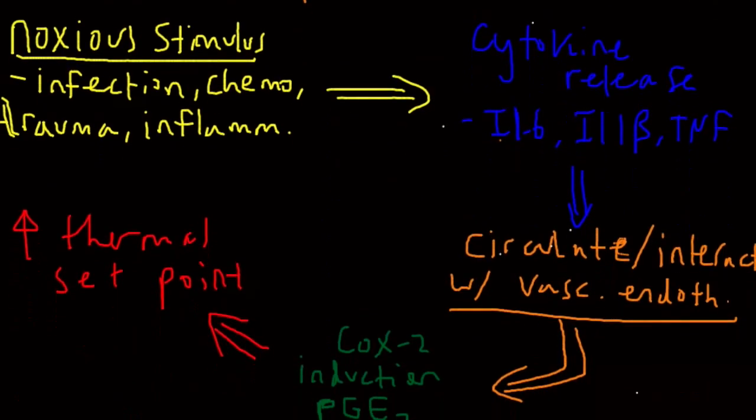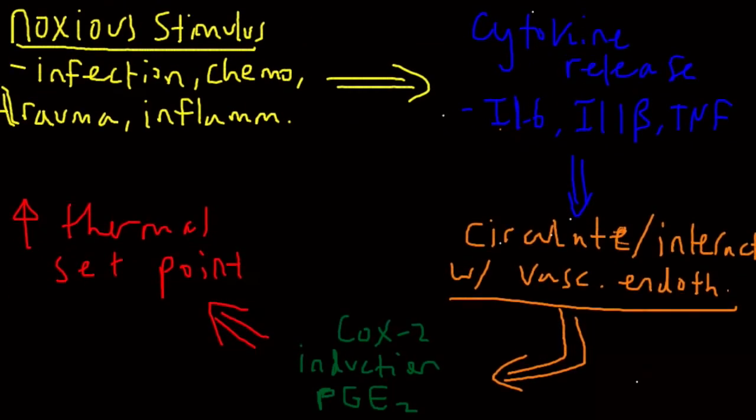Let's go into the mechanism of how fever actually manifests itself. We begin first with a noxious stimulus. This could include infection, chemotherapeutics, trauma, or inflammation. By infection, remember that if you have a bacterial infection, it's oftentimes the lipopolysaccharide coating that can directly cause this response. Some sort of noxious stimulus causes the release of a cytokine storm or a series of cytokine messengers.